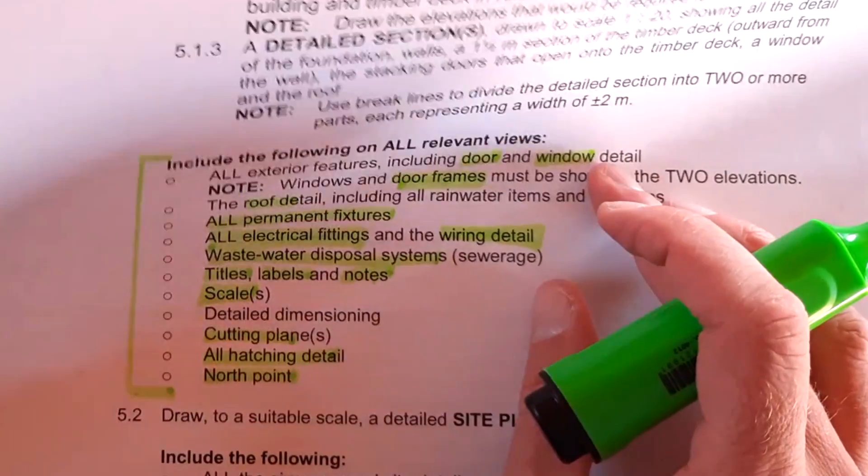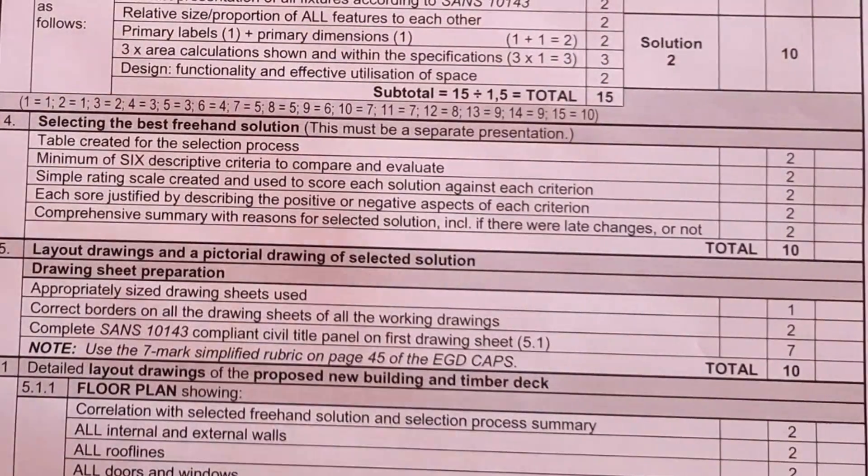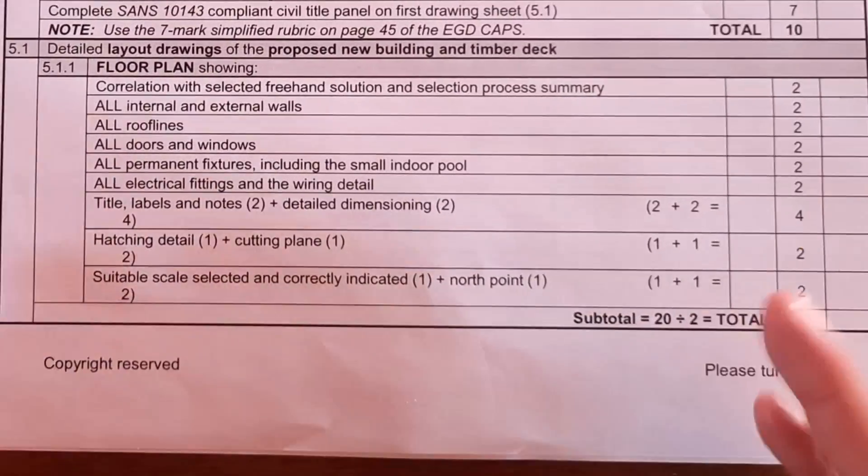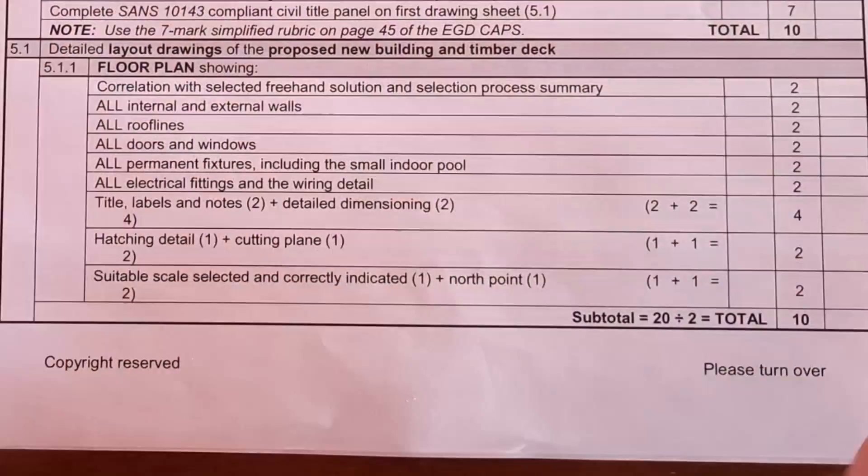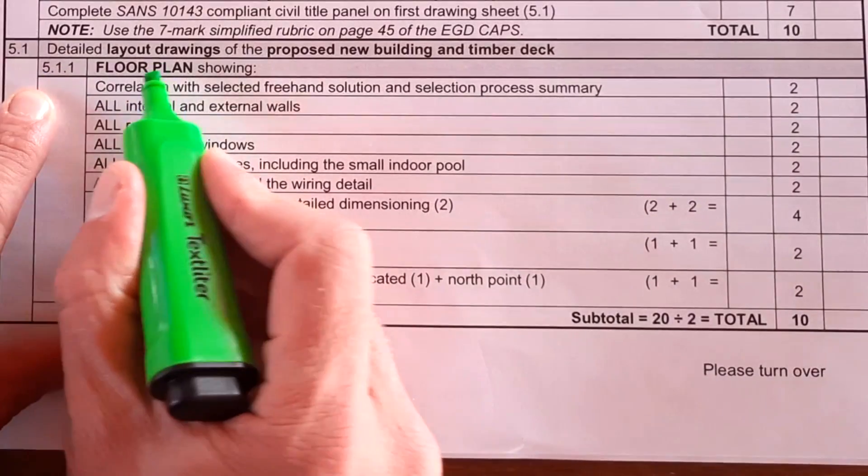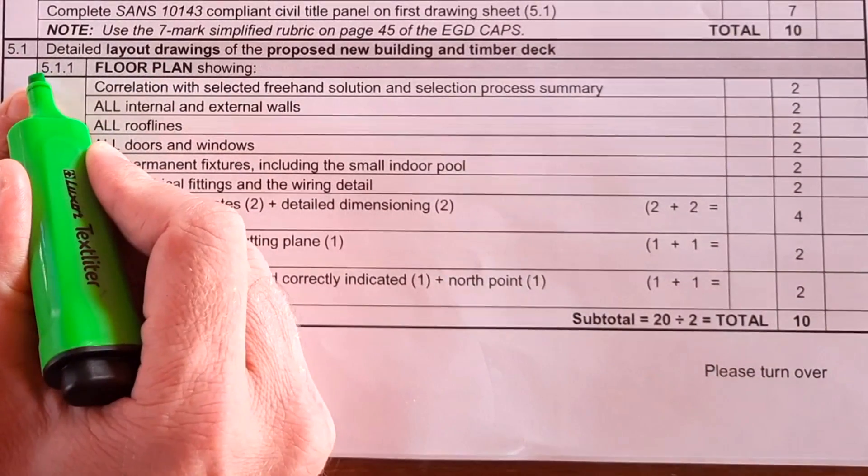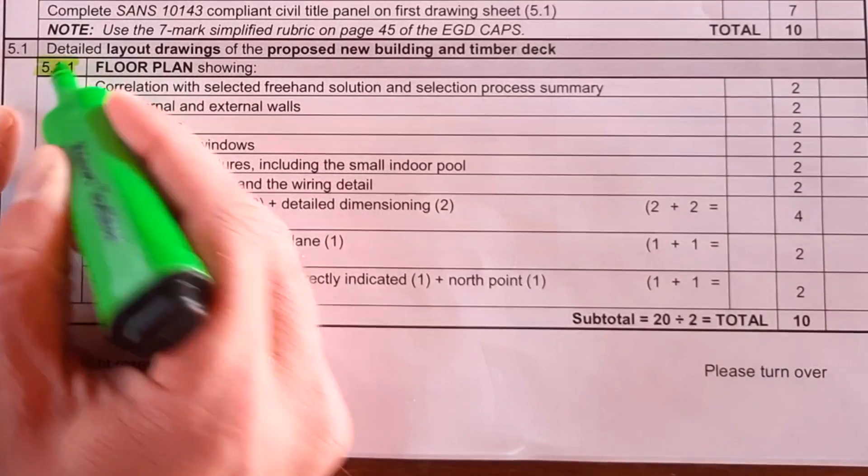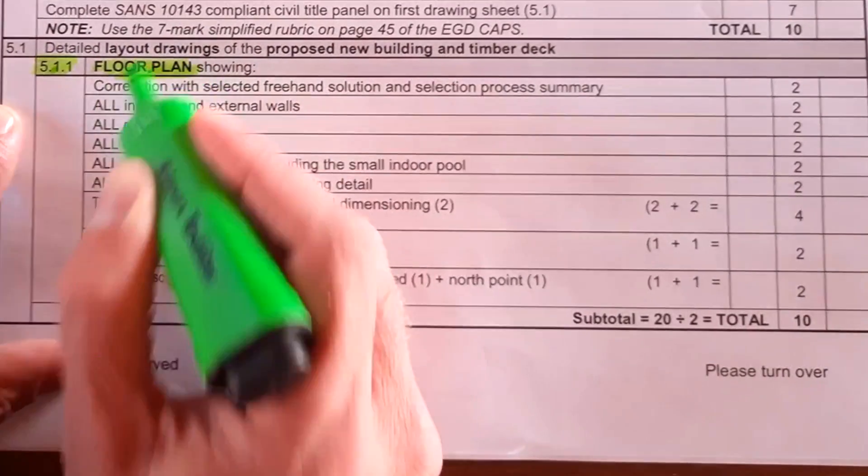Your other checklist that you have to pay attention to is found on page 14 of your pad document, which is right here. So what are they going to look at? First of all, that page of your floor plan is going to be number 5.1.1. That's important. The title of that page will be floor plan.